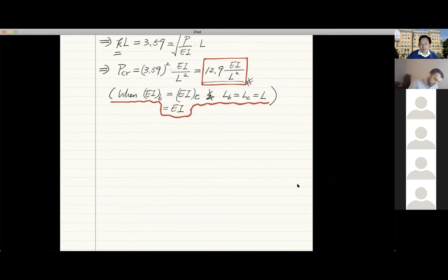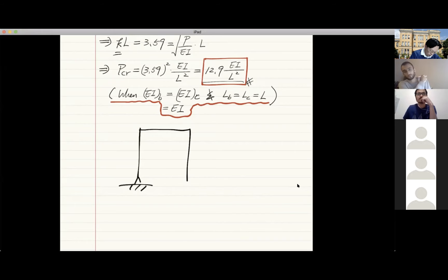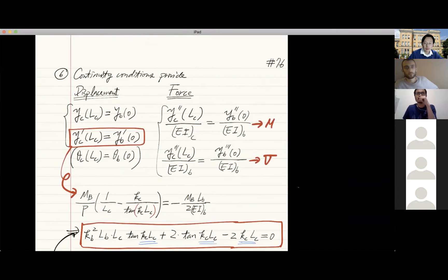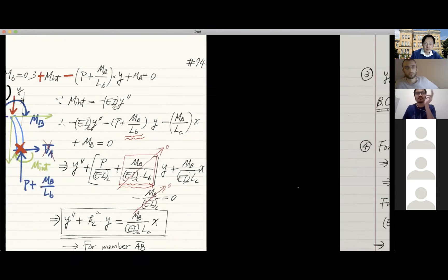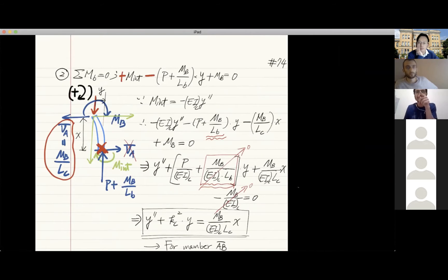Okay, so that's the end of this problem. Hi professor, can you go back to page number 74? The term with mb over EIc*Lc, when it goes to the right hand side, shouldn't it be negative?